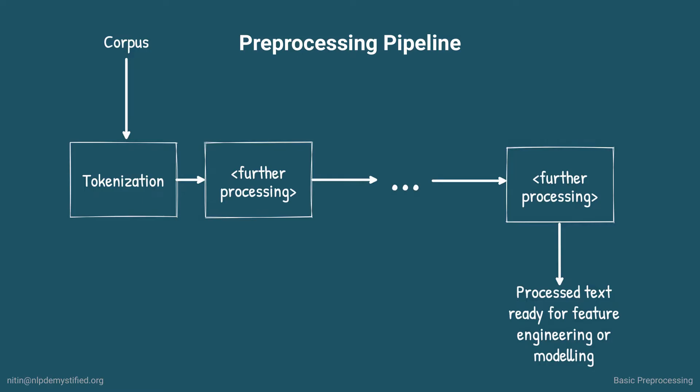As we saw previously, a common way to look at preprocessing is as a pipeline, where we can combine different steps as needed. At times, we may want to even have a step before tokenization. For example, if we scraped webpages, we may need to remove HTML tags before tokenizing the extracted text. Let's talk about other steps we might add, depending on our project.